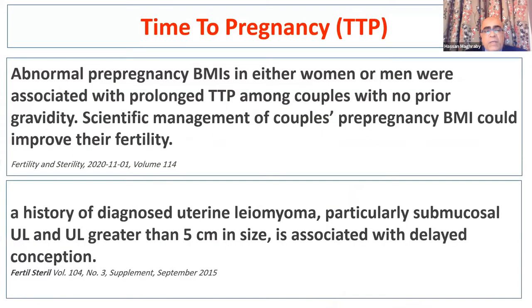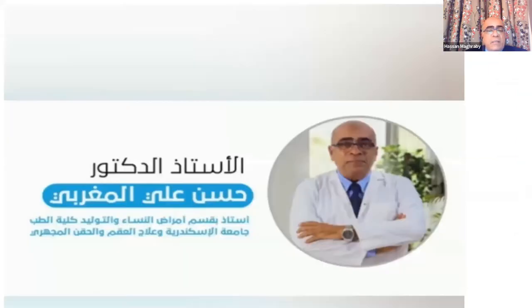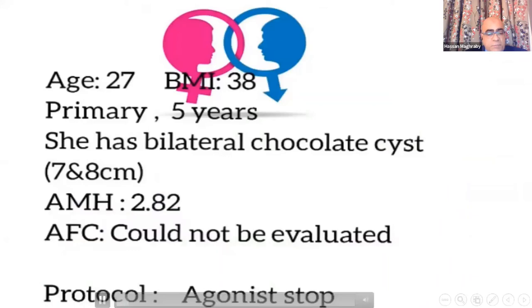Time to pregnancy is affected by BMI. Time to pregnancy is also affected by the presence of fibroids and other factors. It can increase the incidence of abortion and other adverse outcomes.